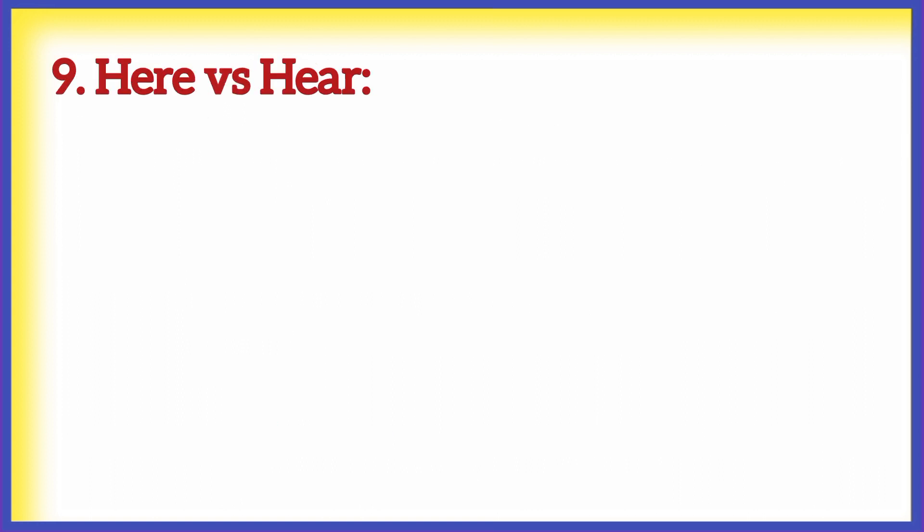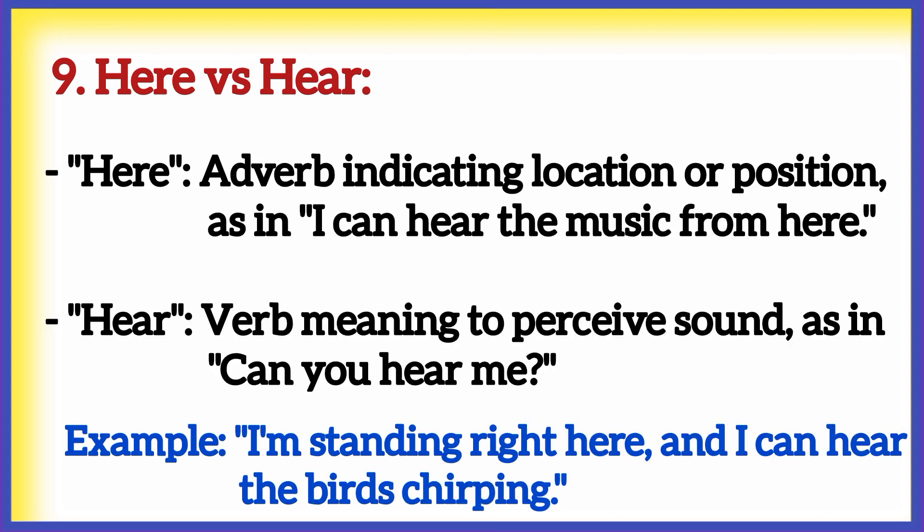Number nine: here versus hear. 'Here' is an adverb indicating location or position, as in 'I can hear the music from here,' while 'hear' is a verb meaning to perceive sound, as in 'can you hear me?' Example: 'I'm standing right here, and I can hear the birds chirping.'